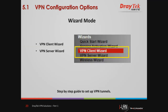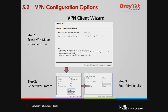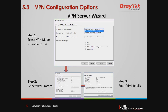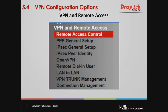We will now look at VPN configuration. The DrayTek DrayOS routers provide a VPN configuration wizard which guides new users through the steps in setting up a VPN tunnel. The VPN client wizard provides step-by-step menu options to configure the client side of the LAN-to-LAN VPN connection. The VPN client will dial out and establish a connection with the VPN server. We start by selecting the VPN mode and profile to use, then select the VPN protocol, and in the last step we enter the VPN details.